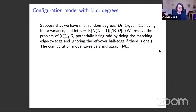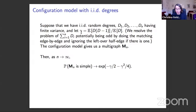With IID degrees of finite variance, the parameter gamma is a finite quantity, and the probability that the multigraph generated is simple converges as n goes to infinity to a strictly positive quantity. So we have strictly positive probability of generating a simple graph, which means conditioning on simplicity is a legitimate operation.